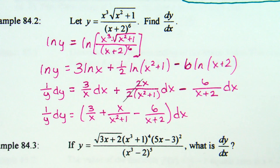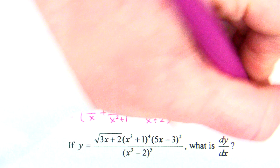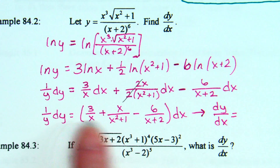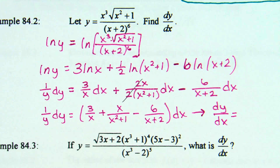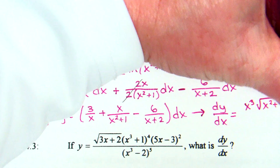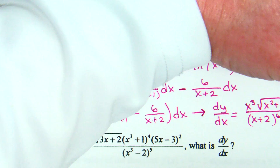I divide and say dy — divide over the dx — and then I have that quantity times y. If I go ahead and put in what y is: x cubed times square root of (x² + 1) over (x + 2) to the sixth, and then times (3/x plus x/(x² + 1) minus 6/(x + 2)).